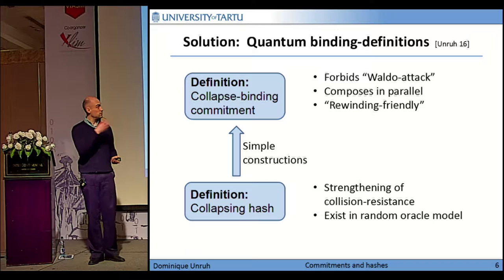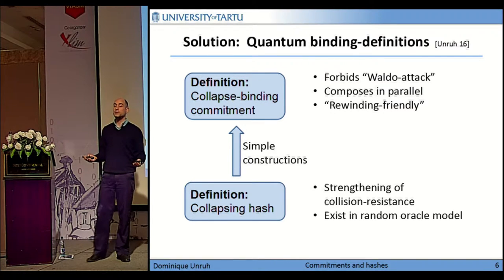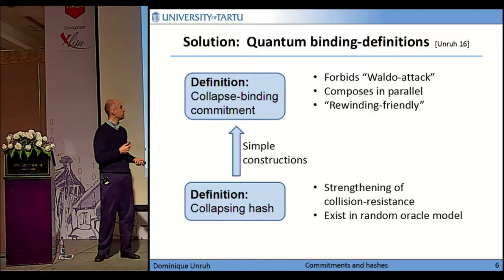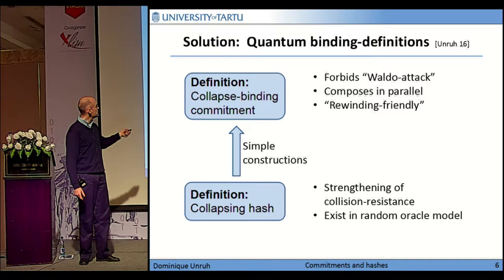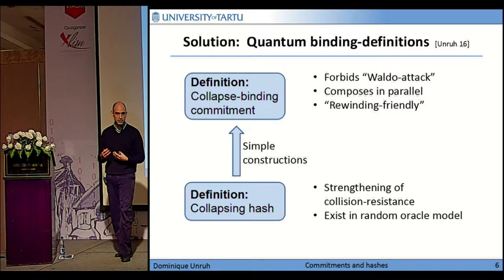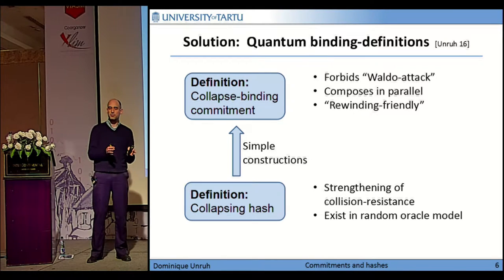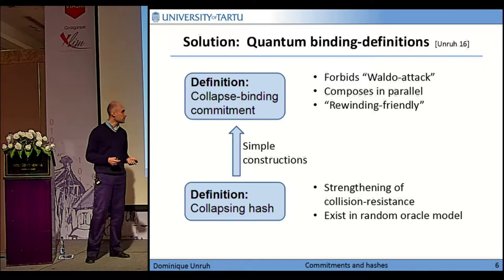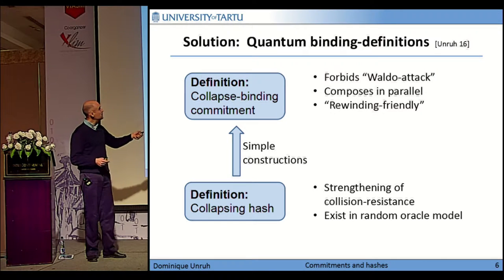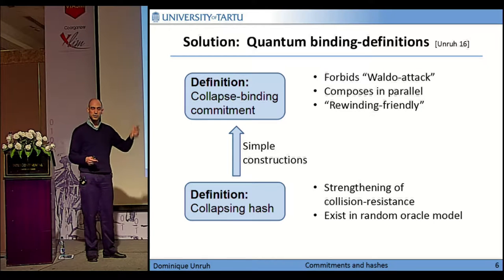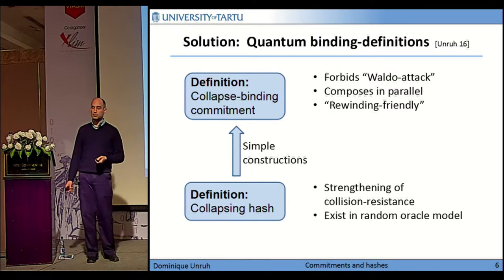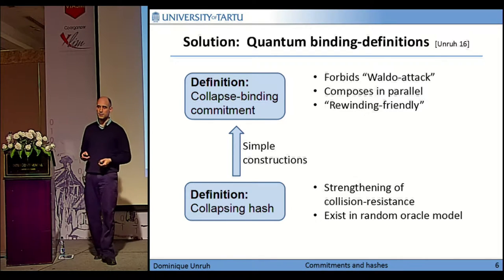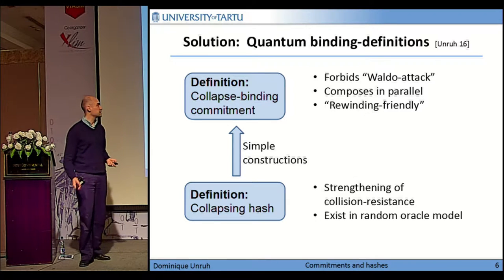So the question — also addressed in this year's Eurocrypt — is what do we do against this? How do we improve the commitment schemes in order to avoid what I call here the Walloping Waldo attack? There were two contributions. One was the definition of a stronger property of computational binding, because it turns out if you just use one-to-one the definition of computational binding used in the classical setting, even the definition does not exclude this attack. There's an improved definition called collapse binding. It does imply that you cannot cheat in this example. It is nice because it composes in parallel and it is rewinding-friendly, so even in proofs that use rewinding — which are particularly tricky in the quantum setting, like when you use zero-knowledge proofs — these commitments behave nicely.